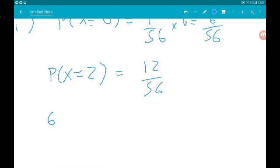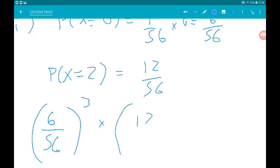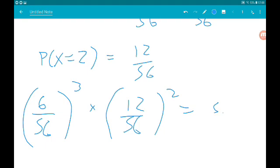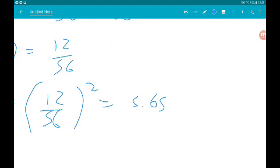Okay, so all we then need to do is 6/56 cubed, so that's the probability for no gold stars on the first three days times 12/56 squared. Now that will give us 5.65 times 10 to the minus 5, which is 0.0000565.